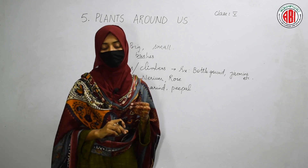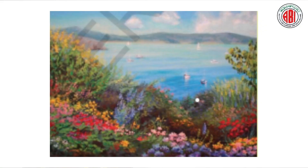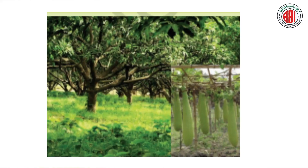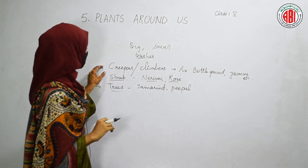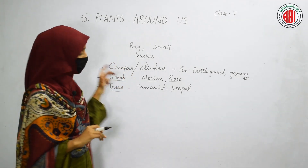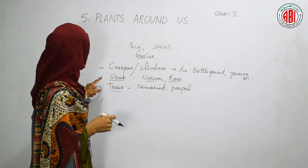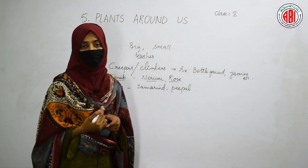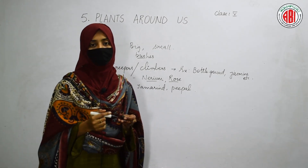Some plants have multiple stems arising from the ground — these are called shrubs. Examples of shrubs include nerium and rose. The next type is trees — big plants are called trees, for example tamarind and peepal. So the different kinds of plants are: creepers and climbers that need support to grow, shrubs with multiple stems from the ground, and trees which are the big plants.